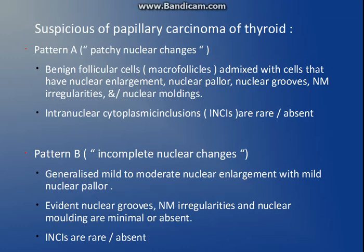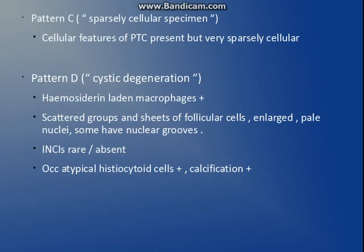For example, suspicious for papillary carcinoma thyroid — we give this when there are few cells showing nuclear grooves, nuclear molding, nuclear enlargement, and nuclear clearing, but intranuclear inclusions are not present and not all cells show the same findings. Also when incomplete nuclear changes are present — no evident nuclear grooves or nuclear molding but nuclear clearing and nuclear enlargement are found. Third, if features of papillary thyroid carcinoma are found but the specimen is sparsely cellular.